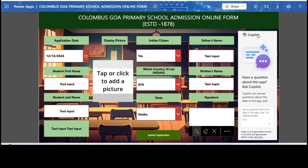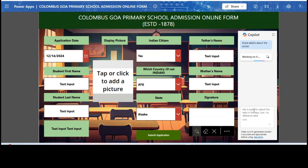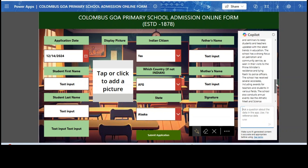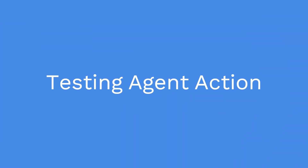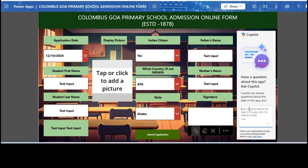Now I'm going to test the copilot which is embedded here in the app. We have customized the copilot as per our need and deployed it in Power Apps. As mentioned, this is our primary school admission form. Before filling out the form, a user — a parent or candidate — can query about the school. I'll type: 'Share details about the school.'